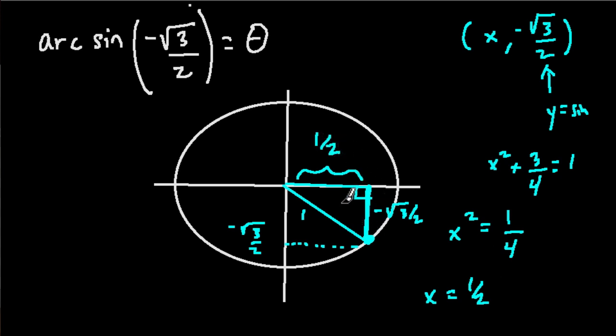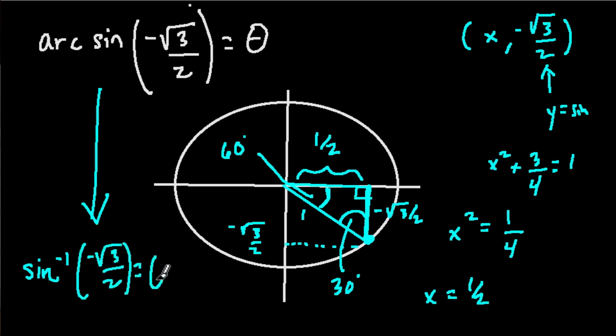Now, hopefully you recognize that this has got to be a 30-60-90 degree triangle. Our 30 degree angle is right here. In our 30-60-90 triangle, the leg over here is equal to half the hypotenuse. And this has got to be 60 degrees. Because our three angles together have to add up to 180. So that means the arc sine of negative √3 over 2, or sine to the negative 1 of negative √3 over 2, equals 60 degrees. And that's the idea of this process.